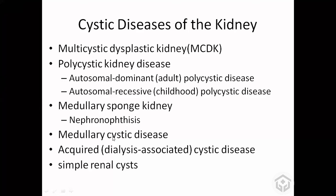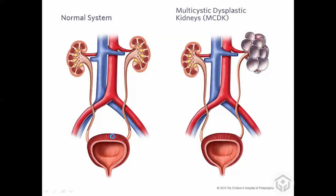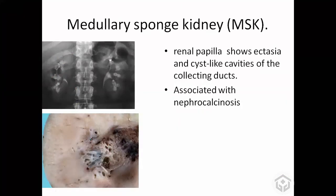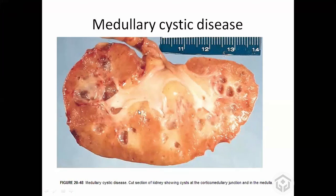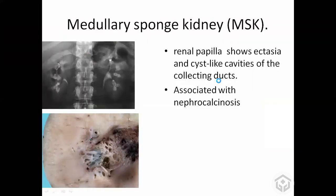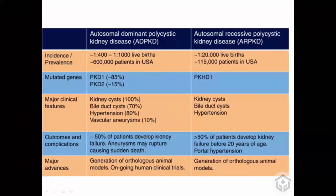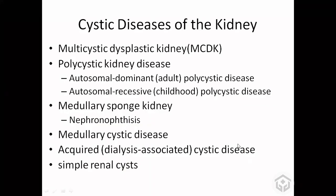The other condition is medullary cystic disease. Between the cortex and medulla, they develop cysts at the corticomedullary junction. Cysts can also develop after dialysis - these are called acquired cysts. The important thing about acquired cysts is that they can develop renal tumors inside.